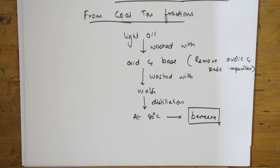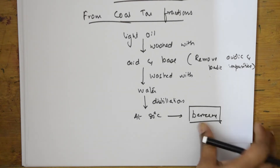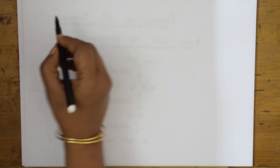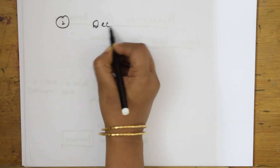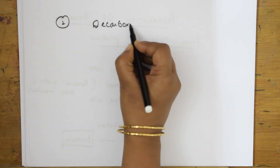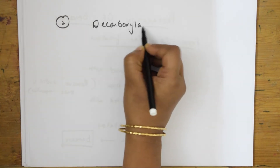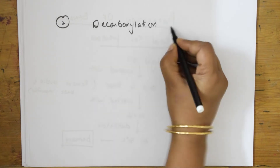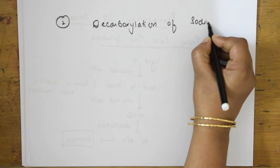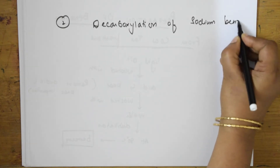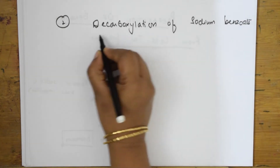This is one method of preparation. Now let us see the next method: I can prepare benzene by decarboxylation — decarboxylation of sodium benzoate.